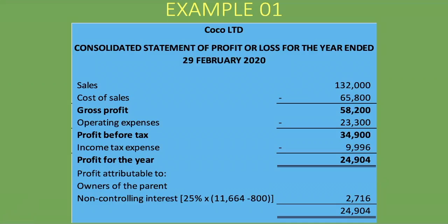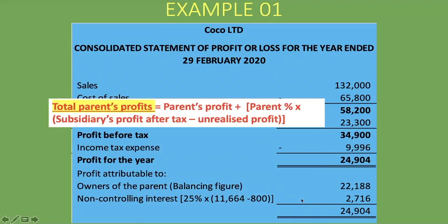The amount attributable to the owners of the parent is the total group profit minus the non-controlling interest — it's the balancing figure. 24,904 minus 2,716 gives 22,188 rand belonging to the owners of the parent. Alternatively, you can calculate it using the formula: parent's own profit from its statement of profit or loss, plus the parent's percentage (75%) × (subsidiary's profit after tax of 11,664 minus unrealized profit of 800). This should give the same 22,188 rand, but typically you use it as the balancing figure once NCI is calculated.